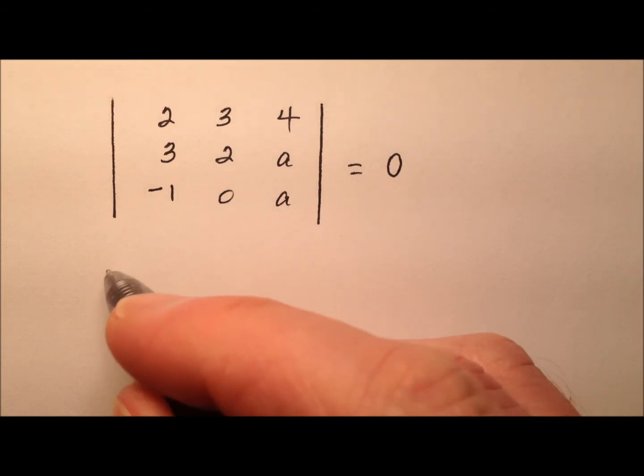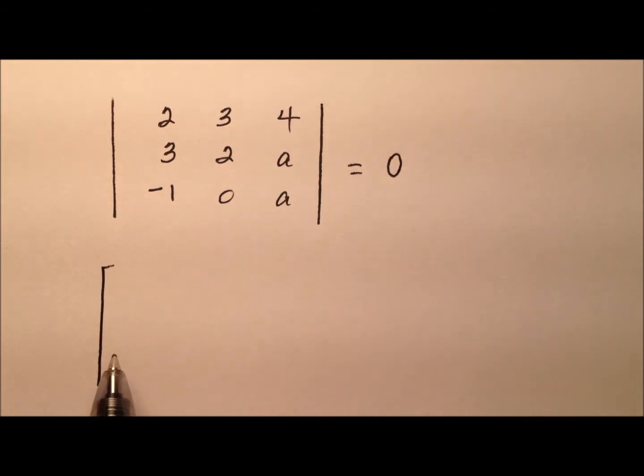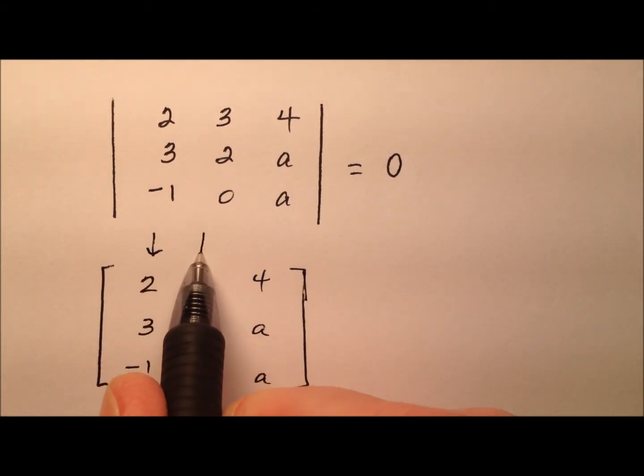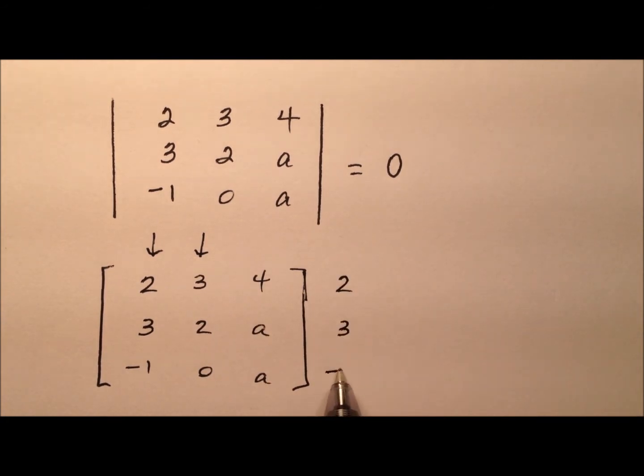To find this determinant, I'm going to rewrite this matrix with all of its terms right here. I'm going to use the expansion by diagonals and rewrite these first two columns right next to it,